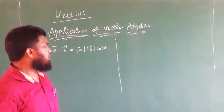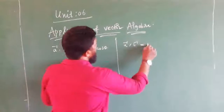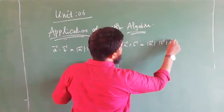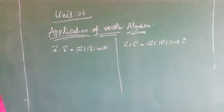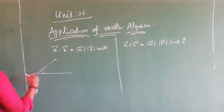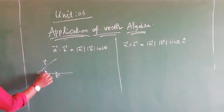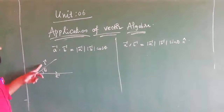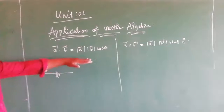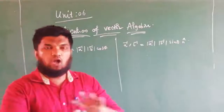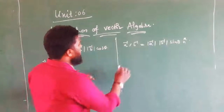We also study the cross product. A cross B is equal to the magnitude of A and the magnitude of B multiplied by sin theta times n. The dot product formula is A dot B equals magnitude of A times magnitude of B times cos theta. We will learn the cross product and the dot product concepts.